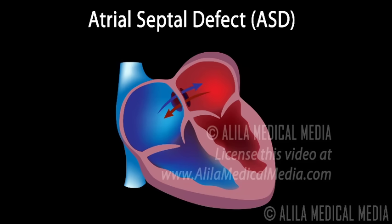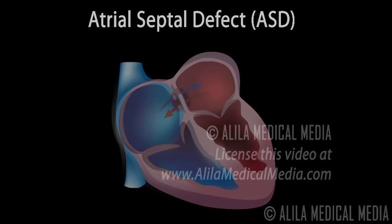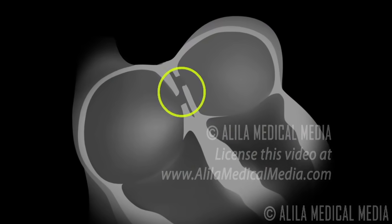During fetal development, when the interatrial septum is being formed, a small passageway called the foramen ovale is left open to allow the blood to bypass the non-functional fetal lungs while the fetus obtains oxygen from the mother's placenta. At birth, as the lungs become functional, the changes in pressures between the two sides of the heart force the opening to close.